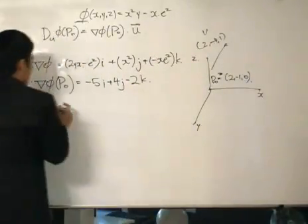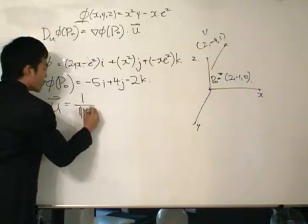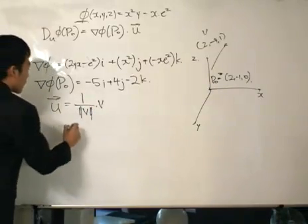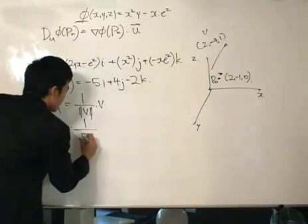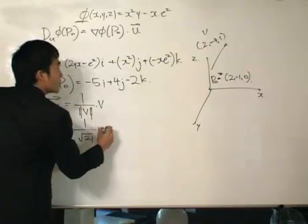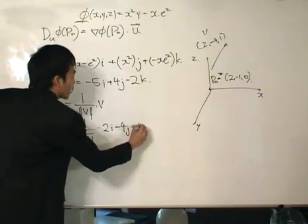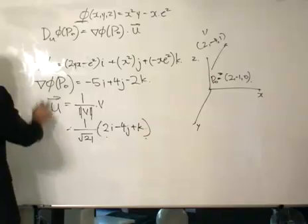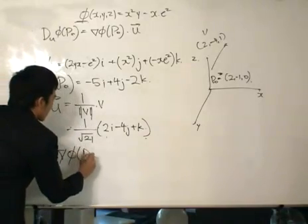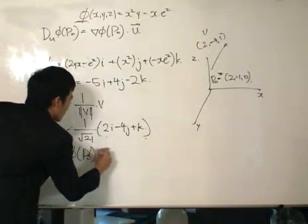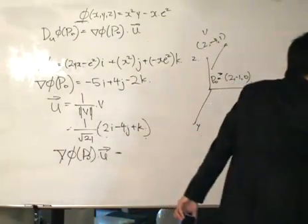Bearing in mind that when we use this equation over here, u needs to be a unit vector. So, u is going to be equal to 1 over the magnitude of v multiplied by v. And the magnitude of v, we can calculate as root 21. And the vector would be 2i take away 4j plus k. Now, we've got the vector here, we've got the vector over there, so we can now dot the two vectors together. So, del phi evaluated at p-naught dot with the unit vector u is going to equal to, let me just make a quick calculation, or let me refer to my book.